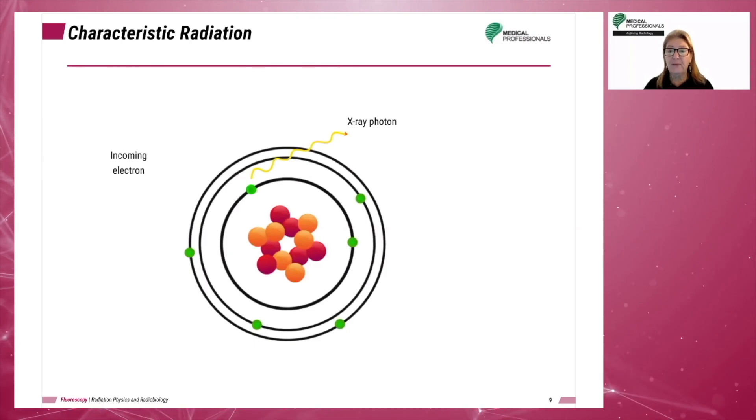Characteristic radiation comprises approximately 10% of the X-ray beam at the highest diagnostic range for kVp settings. The higher the kVp, the more characteristic radiation produced because there are more electrons of sufficient energy to produce characteristic radiation.